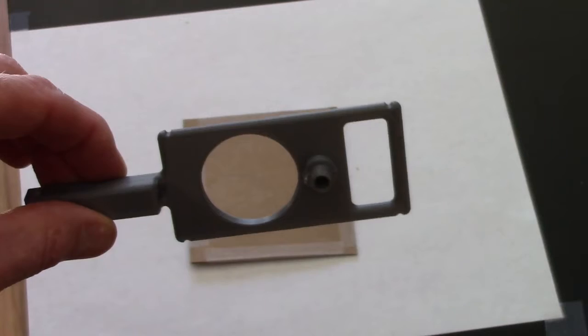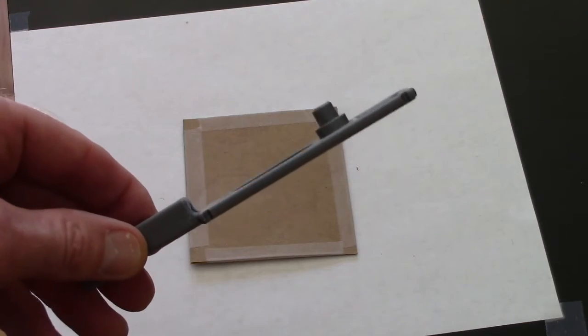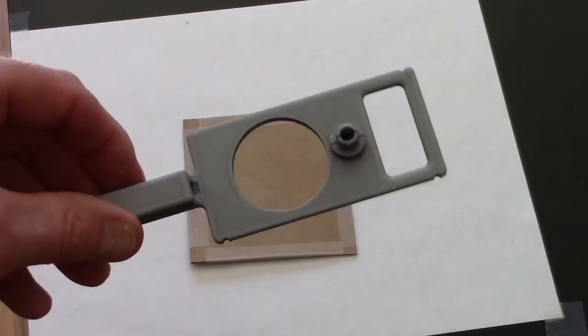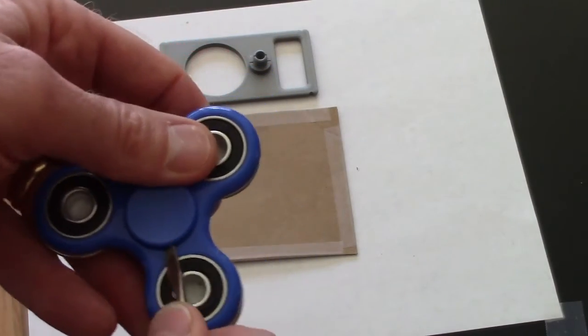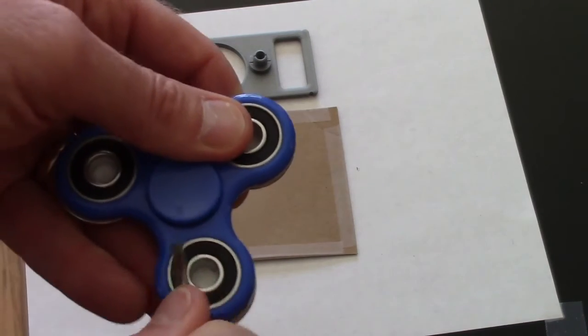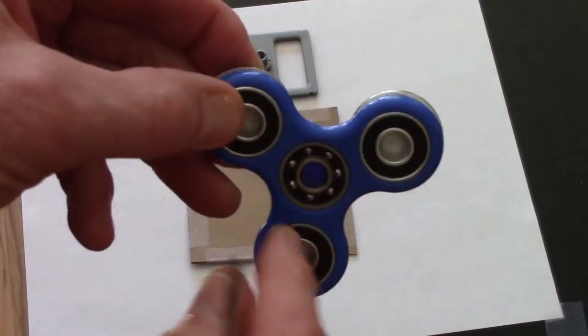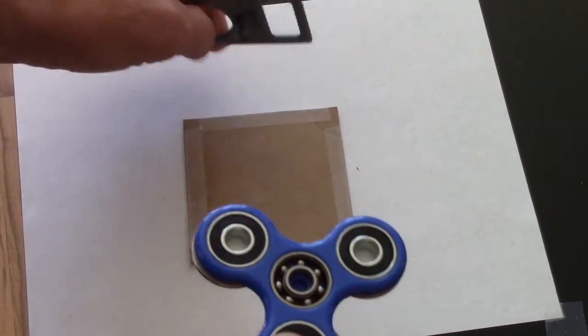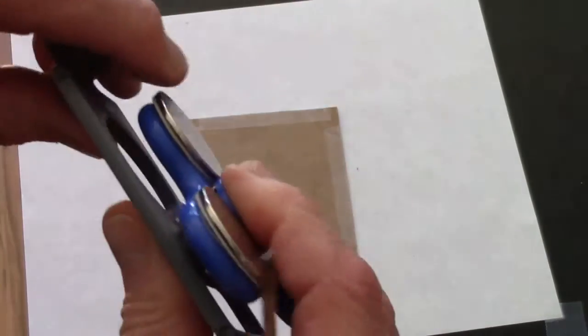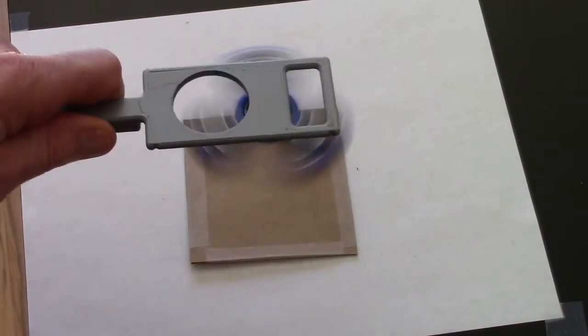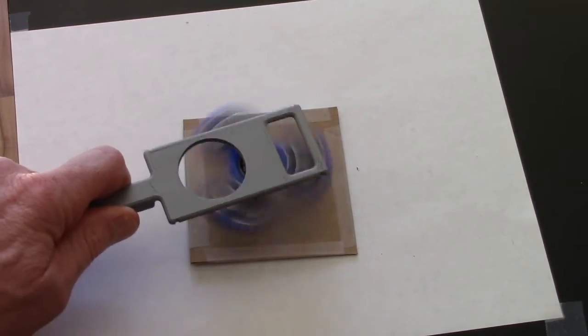Another handle that we can use for the fidget spinner is this piece. This is used in a subsequent lesson in this unit. If you have access to a 3D printer, you can print out this. The file to print it is in the lesson plan. You can just take a screwdriver and just be gentle and pry off this handle. It exposes the bearing there, and this cylinder on that handle presses in. Now I can use this as a handle just like the other one, so it's easy to get the magnets close to my object.